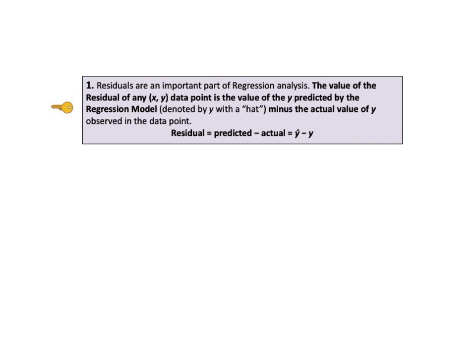It starts out by saying residuals are an important part of regression analysis. The value of the residual of any XY data point is the value of the Y predicted by the regression model, which is denoted by Y with a hat, minus the actual value of Y, which is observed in the data point. Now virtually no regression model is a perfect fit for real world data. For any given value of X or for multiple Xs, the predicted value, also known as the expected value of Y, which is calculated by the model, will usually not be identical to the actual value of Y for that X in the data. This distance difference is an error in the model. Almost all models have some error. The difference is called a residual.